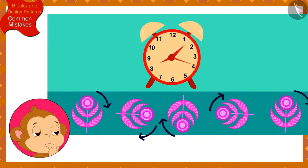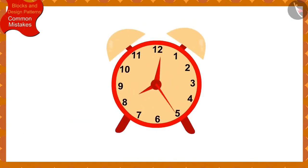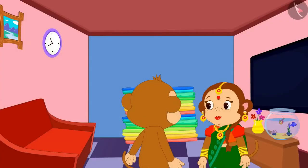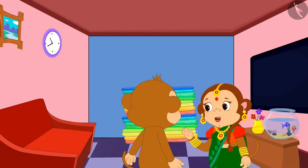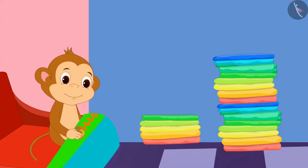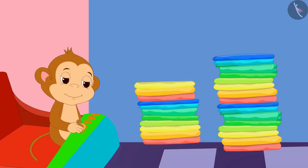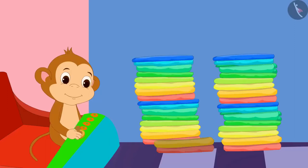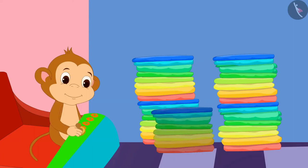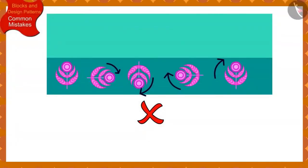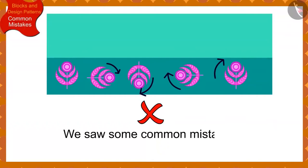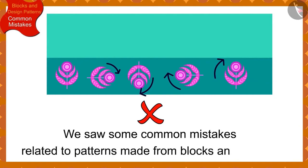Children, remember, whenever you want to know the clockwise direction, look at the direction of the movement of the needles in a clock. Banno explained Babban's mistake to him. Then Babban helped Banno create designs on a lot of sarees without making any further mistake. Children, in this video we saw some common mistakes related to patterns made from blocks and design.